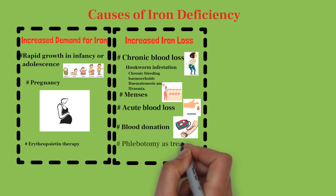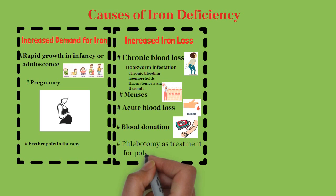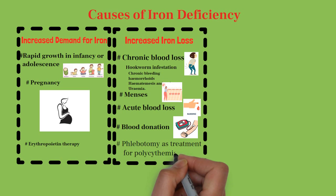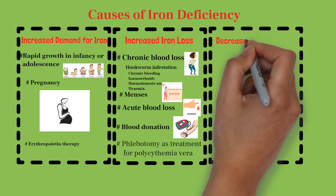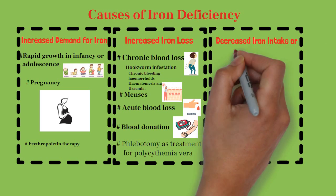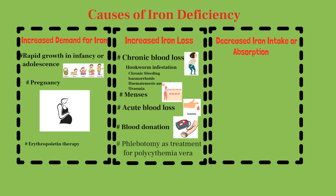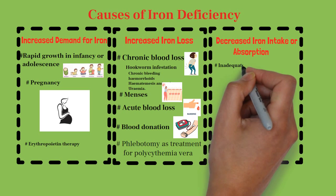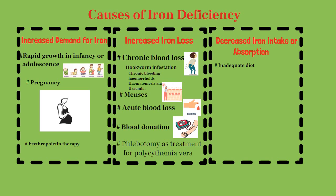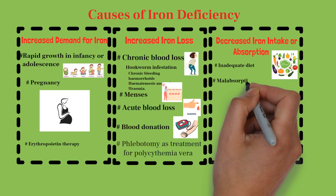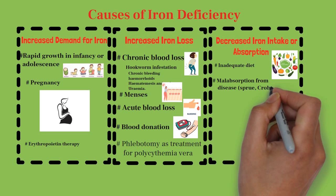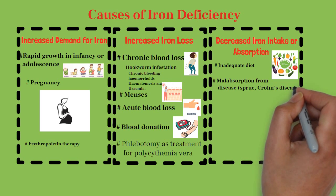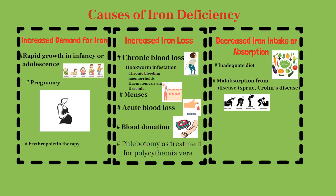The last cause is decreased iron intake or decreased absorption. The first major cause here is inadequate diet. Next is malabsorption syndrome — celiac sprue and Crohn's disease are common conditions where iron absorption is hampered, making iron deficiency anemia common in these people. Malabsorption from surgery such as gastrectomy also contributes, because in these surgeries the production of HCl decreases, which causes decreased absorption of iron leading to iron deficiency anemia.